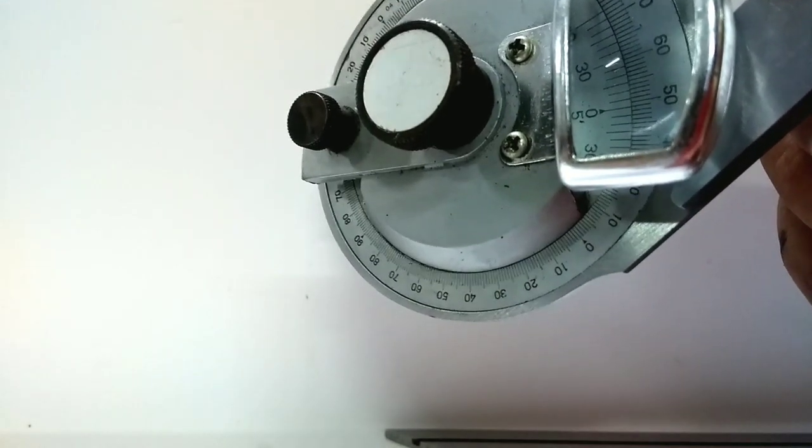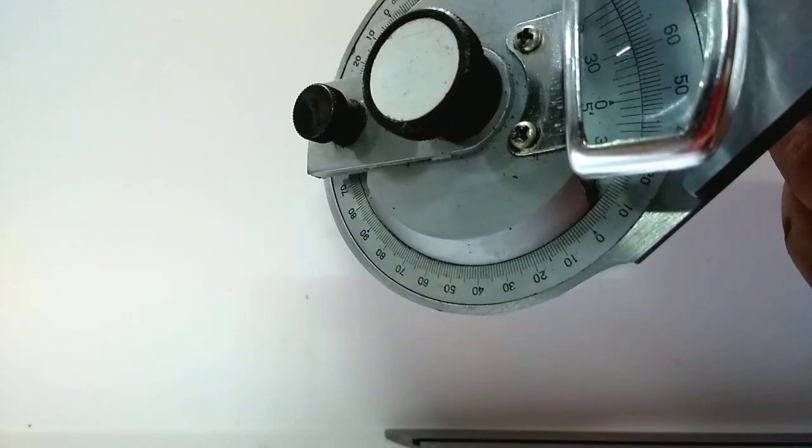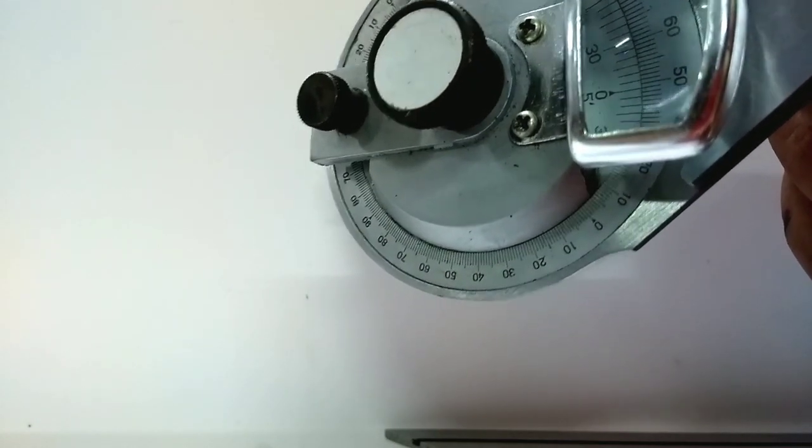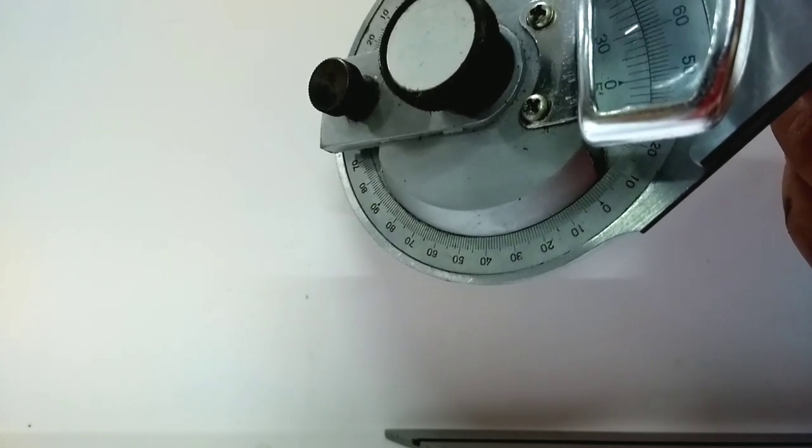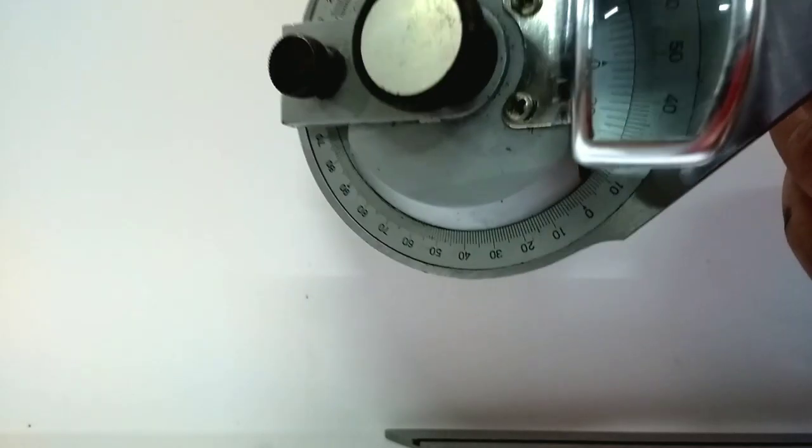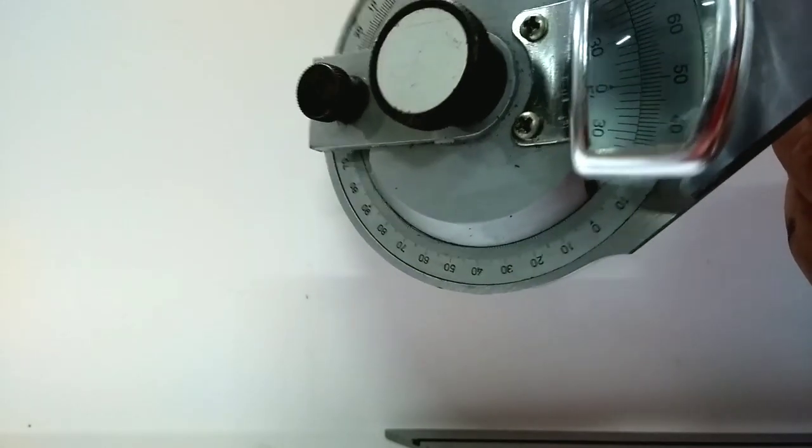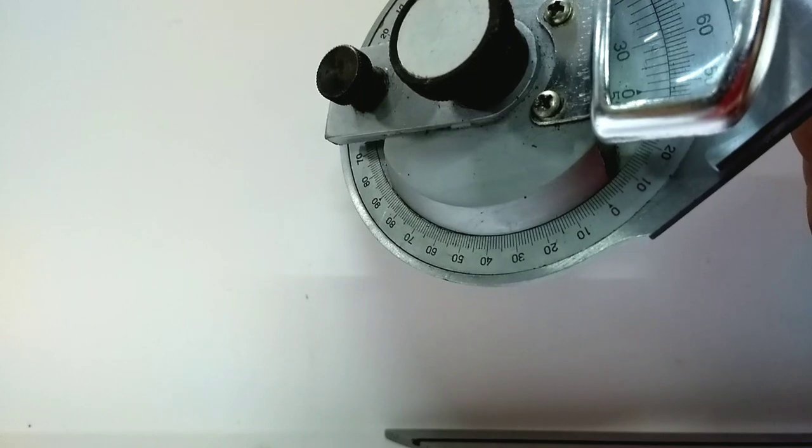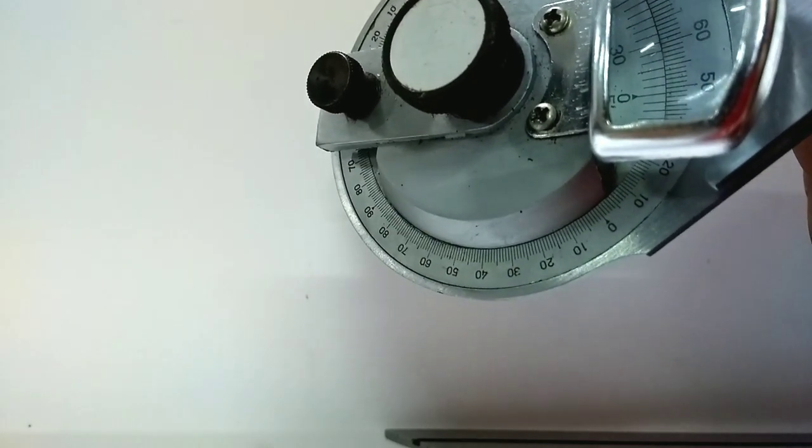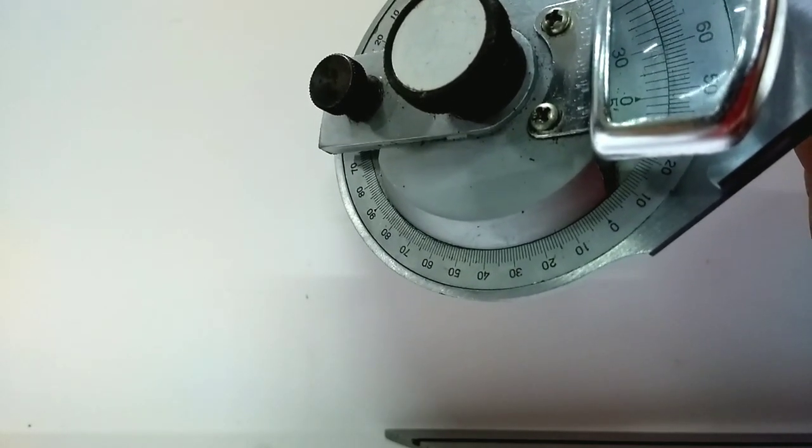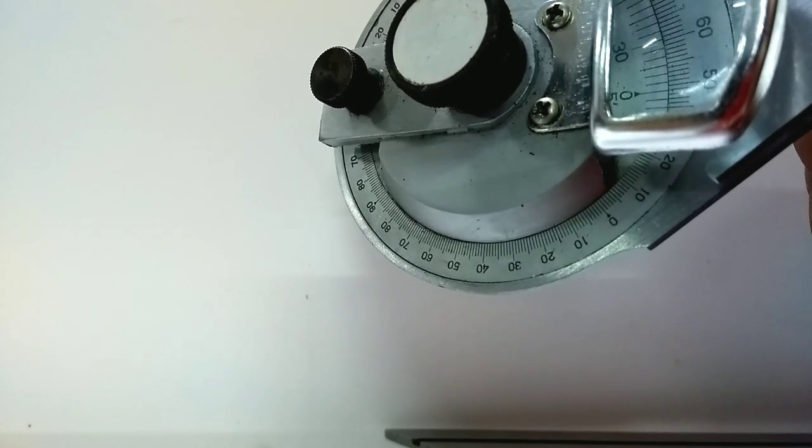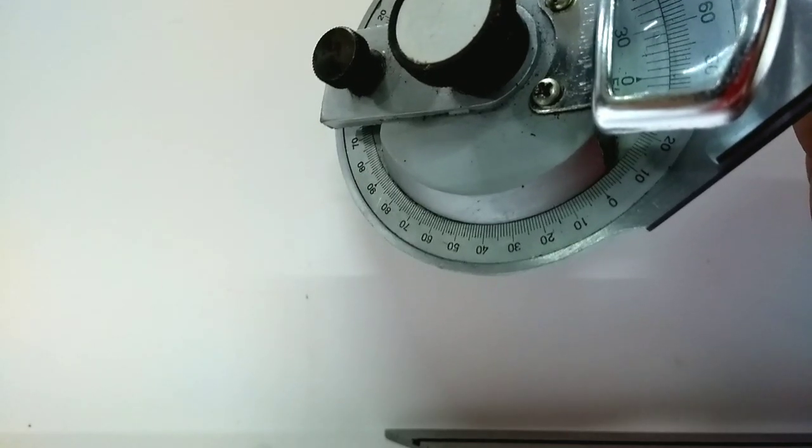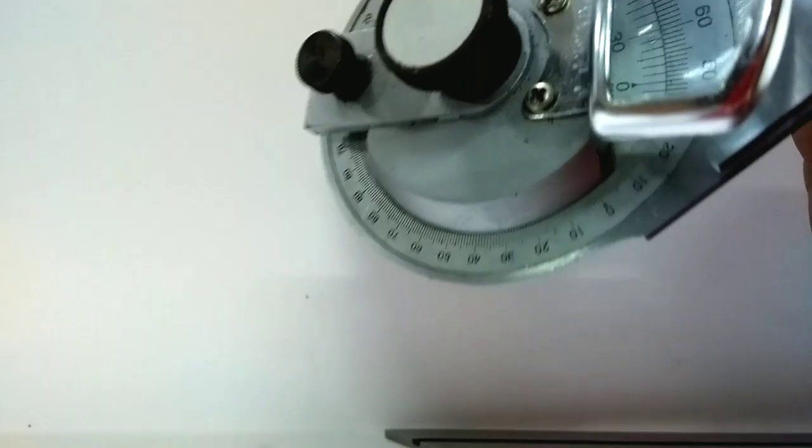Where that 0 is, I think it is at 51. Yes, it is at 51. Then 51 is your main degree. Then we need to find out which line is coinciding. After calculating this line, I can say 3rd line is coinciding. So 3 into 5 minutes will give you the correct reading of 15 minutes.